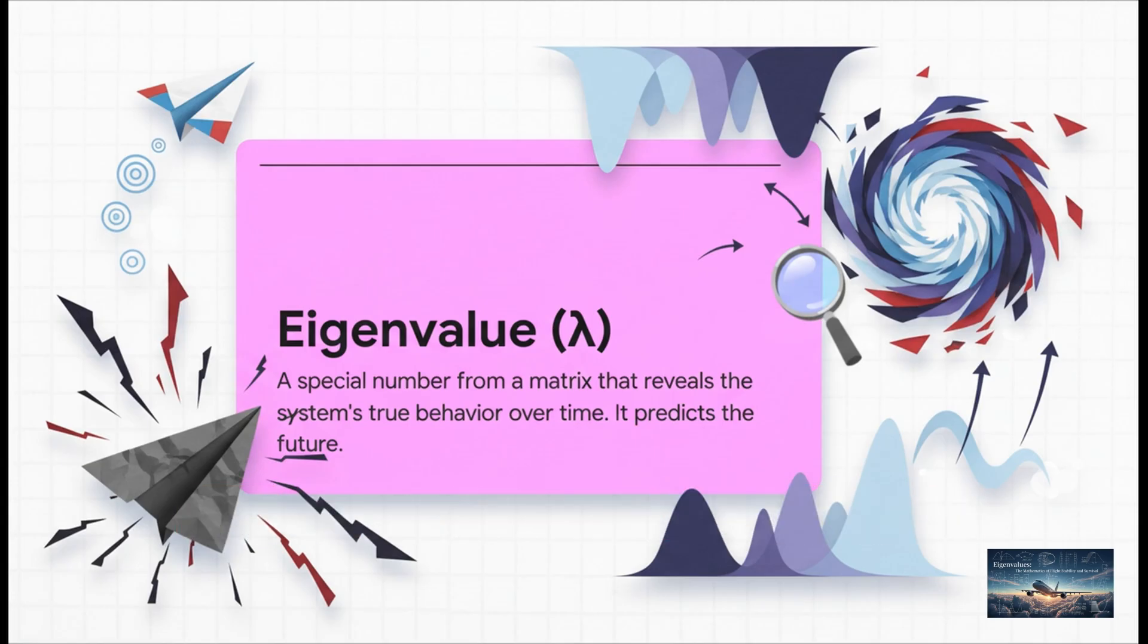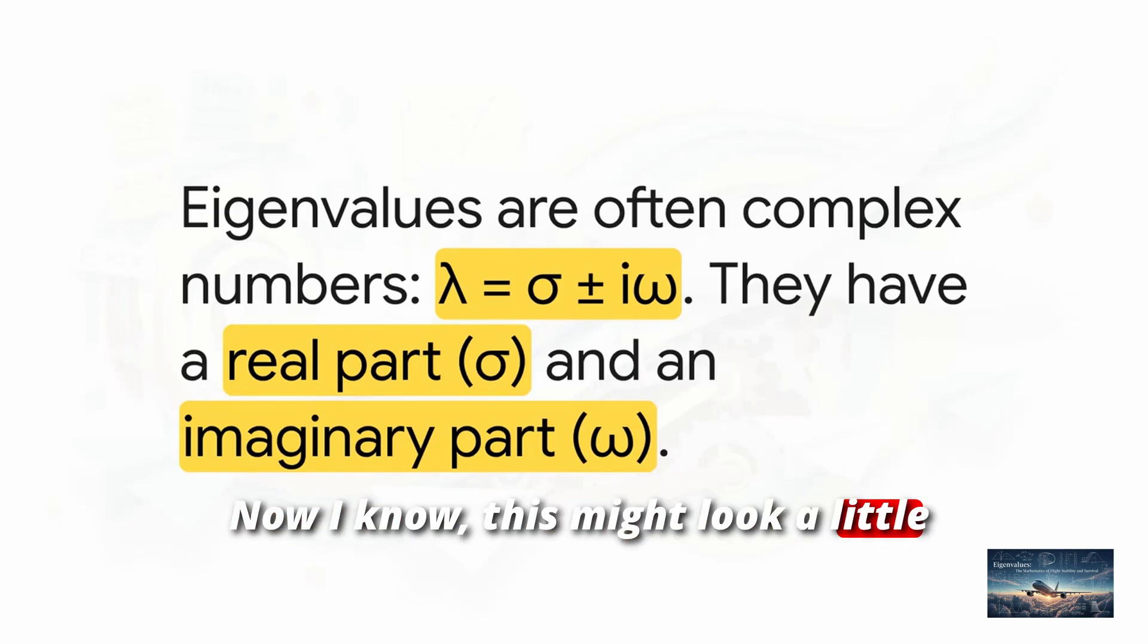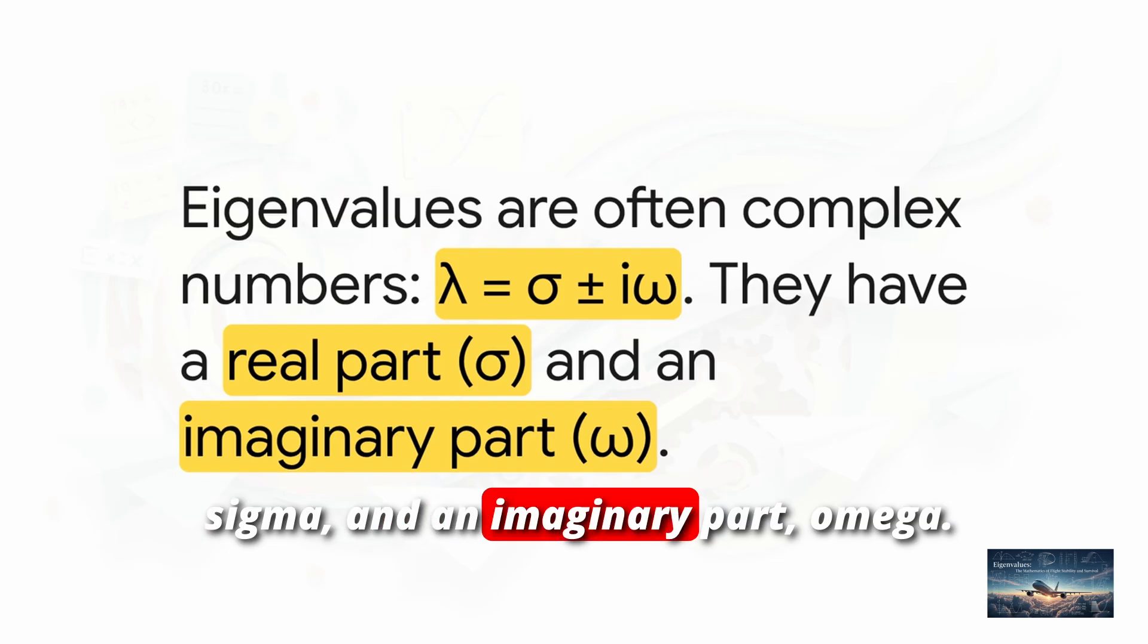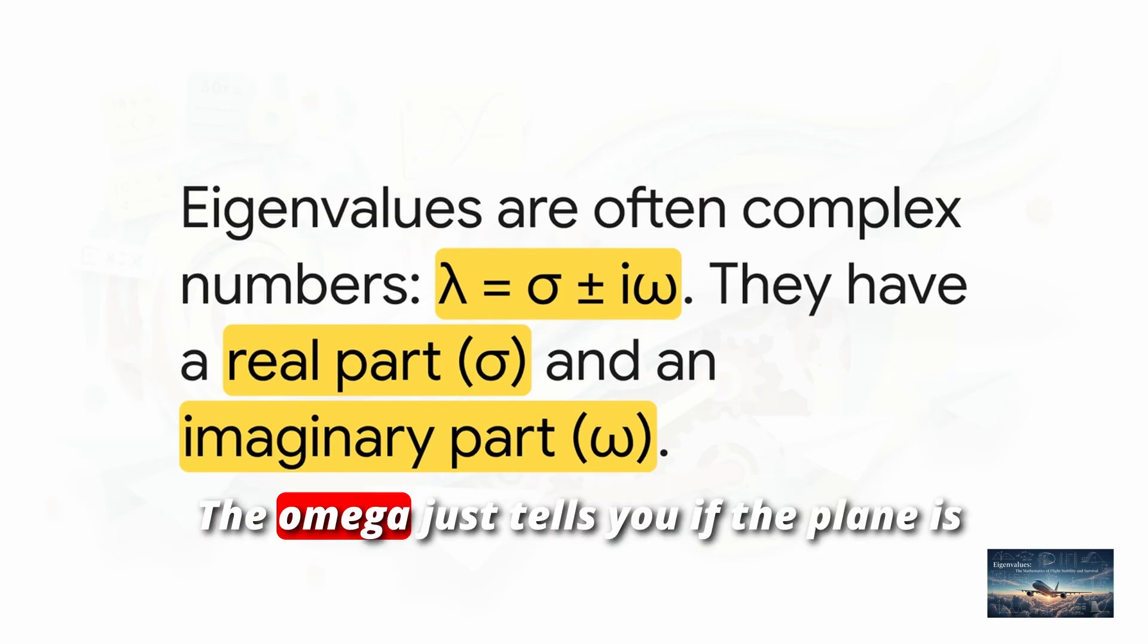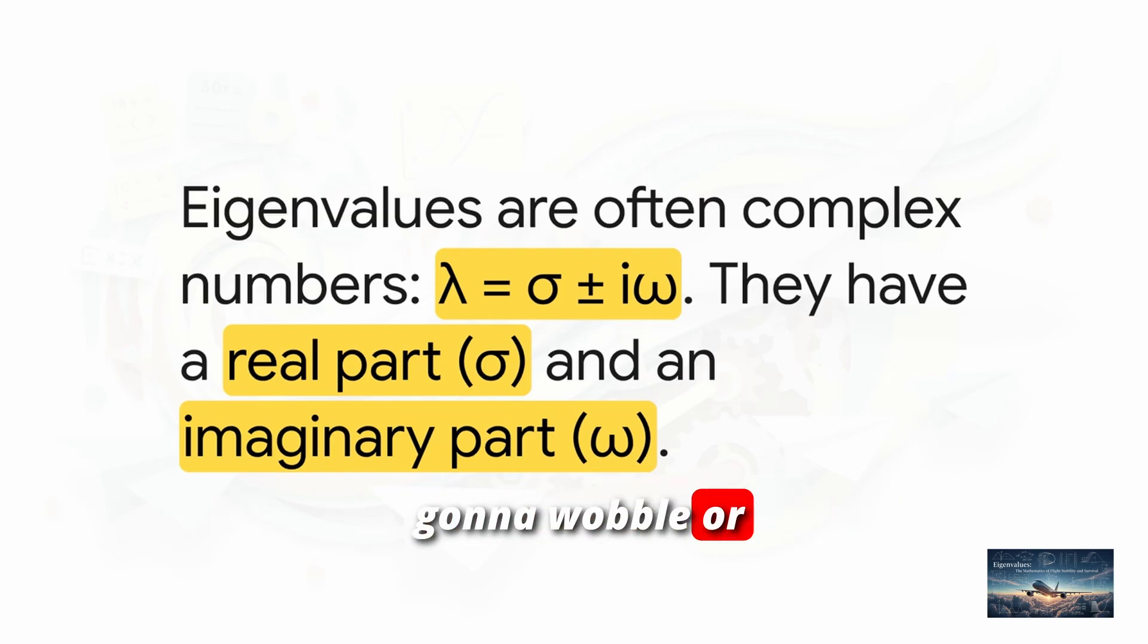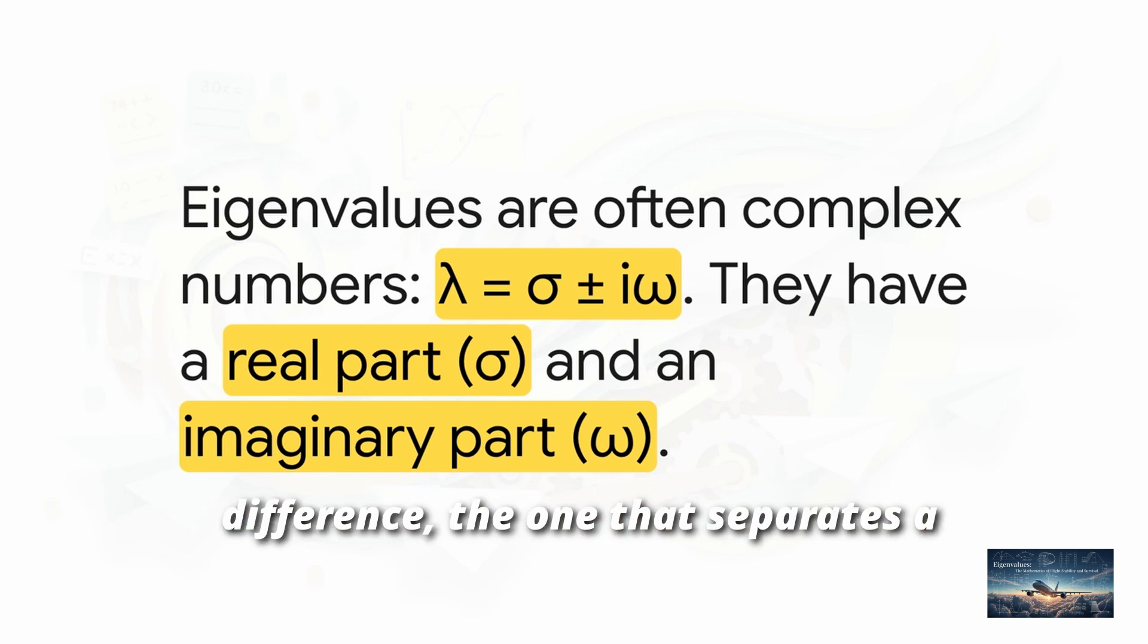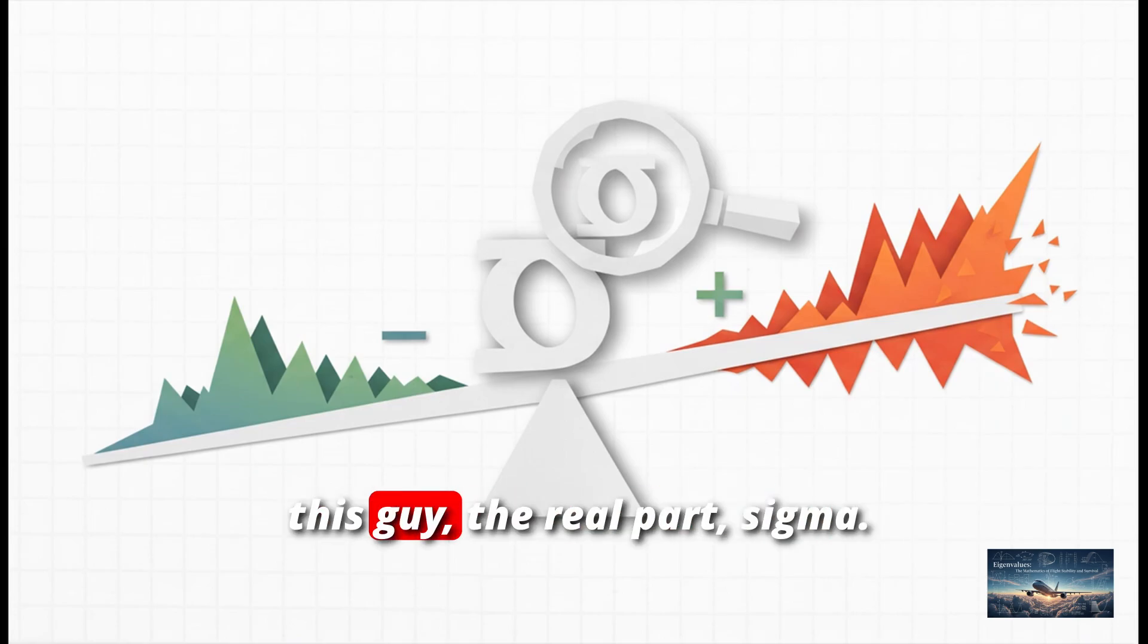And they usually show up as something called a complex number. Now I know, this might look a little scary if you haven't seen it in a while, but hang with me. It's actually pretty simple. It has two parts. A real part, that's sigma. And an imaginary part, omega. The omega just tells you if the plane is going to wobble or oscillate. But only one of these parts is the one that makes all the difference. The one that separates a safe flight from a catastrophe. And it all comes down to this guy. The real part, sigma.